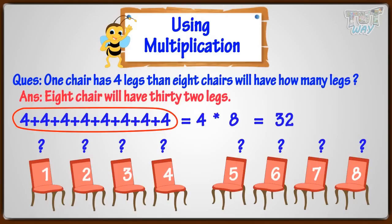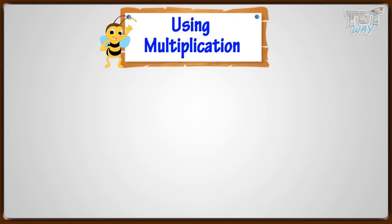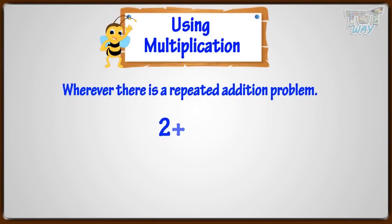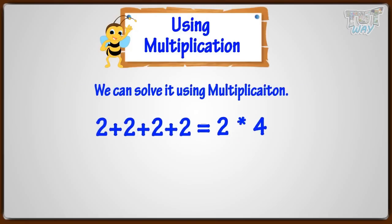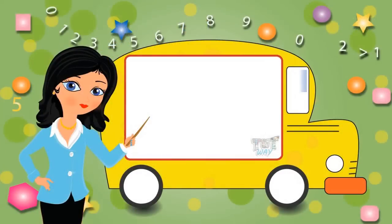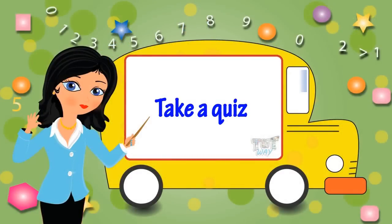So, eight chairs will have thirty-two legs. Good. So, what have we learned? We have learned whenever there is a repeated addition problem, you can solve it using multiplication. Now, you may go ahead and take a quiz to learn more. Bye-bye.